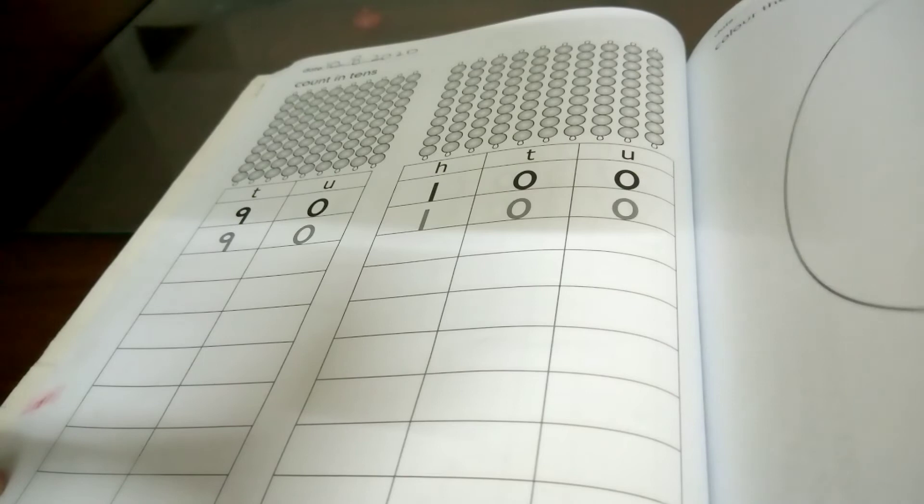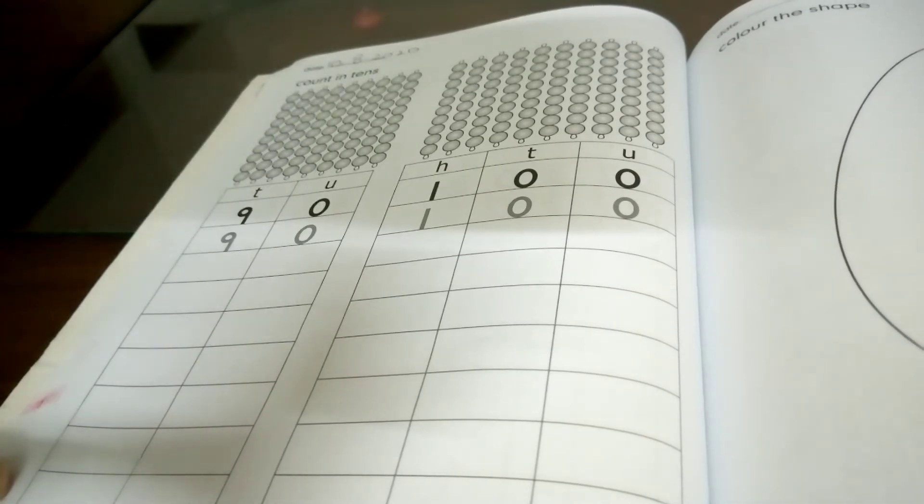Today our topic is counting tens. You have completed your counting 80 to 90, now you will start from 90. You have to count.